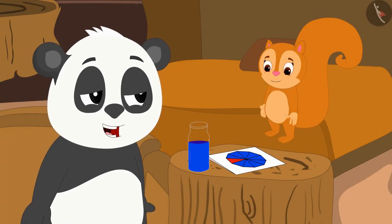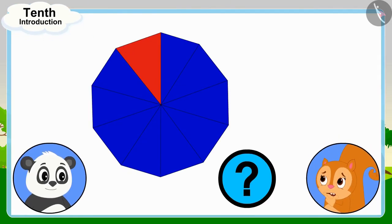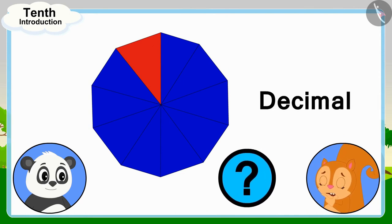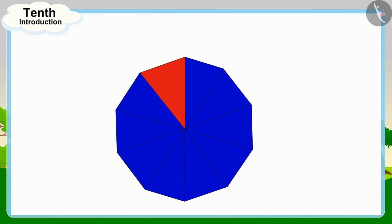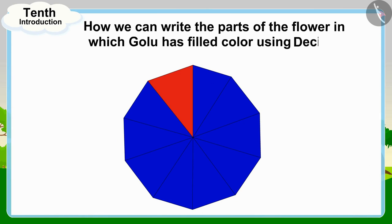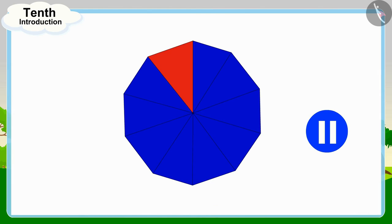Chanda, I have colored the remaining nine parts. Chanda is wondering how she can write the parts of the flower filled by Golu using decimal. Children, can you tell how we can write the parts of the flower in which Golu has filled color using decimal? If you wish to, you may stop the video and think about the answer.